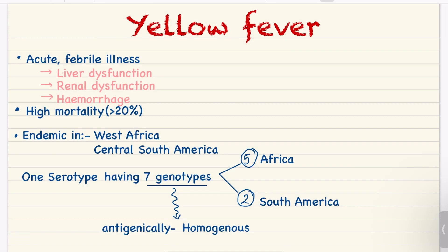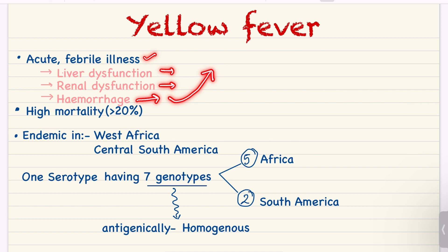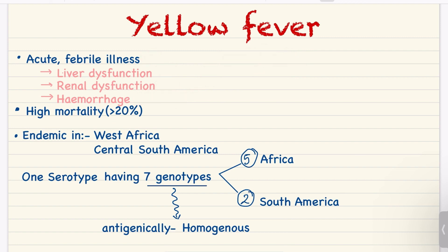Today's topic is yellow fever, also known as Pila Bukhar. It is an acute febrile illness which causes liver dysfunction, renal dysfunction, and hemorrhage. Because it causes hemorrhage, it is also known as yellow hemorrhagic fever. It has a high mortality rate of more than 20 percent. It is endemic in West Africa and Central South America.